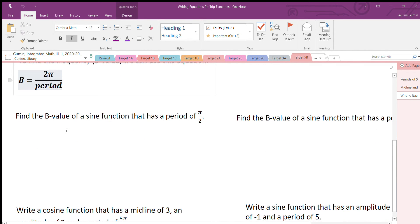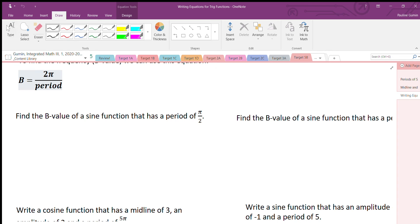So let's practice that. First, let's find the B value of some sine function that has the period of π over 2. So B equals 2π divided by my period. I'm just going to use a good old-fashioned division symbol right here because my fractions within fractions don't look that great. Now when we're dividing fractions, what we're really doing is multiplying by the reciprocal. So let's do that.